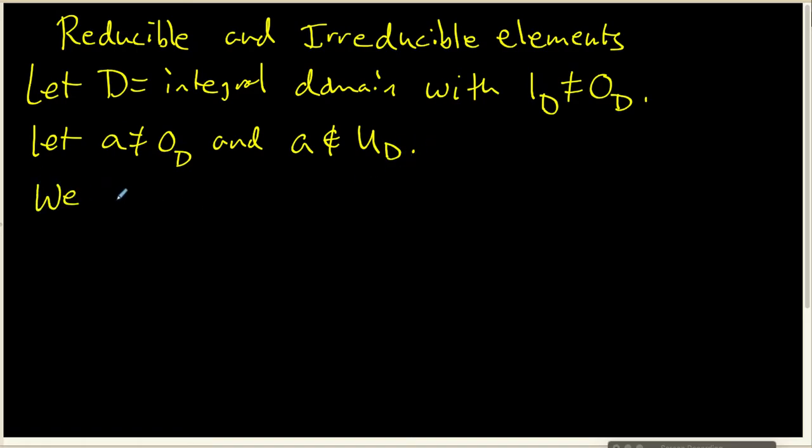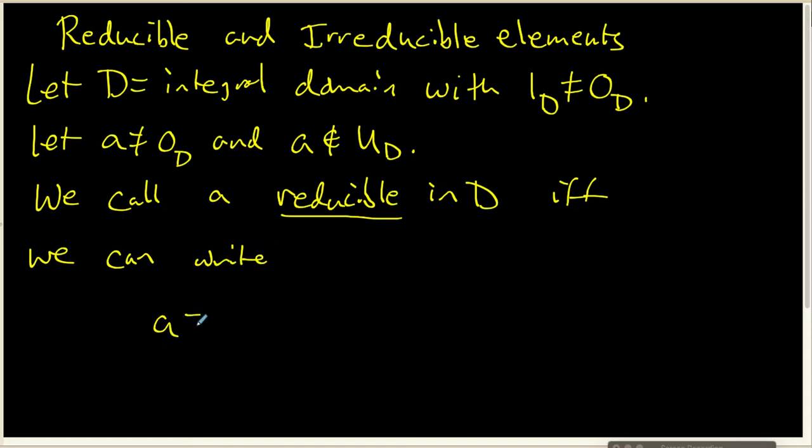We're going to call a reducible inside our domain D if and only if we can write a equals a product b times c where both b and c are inside the domain and these things are not units inside the domain.